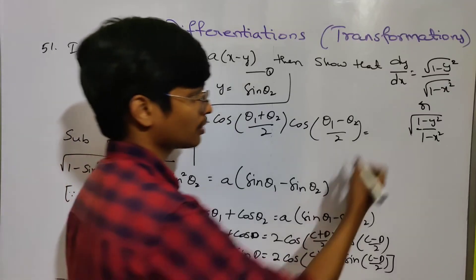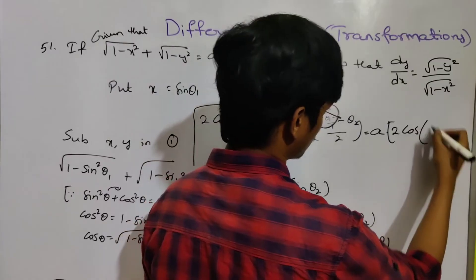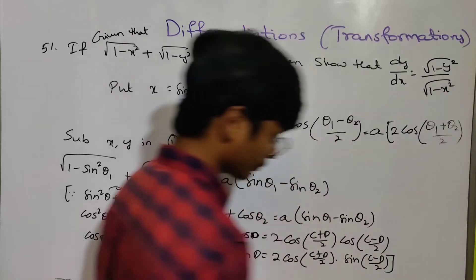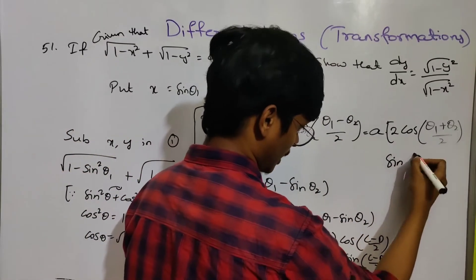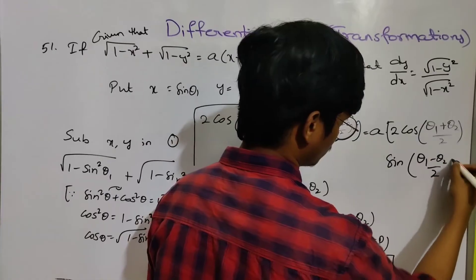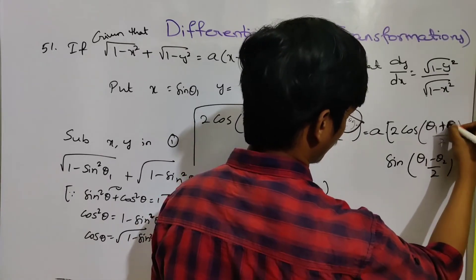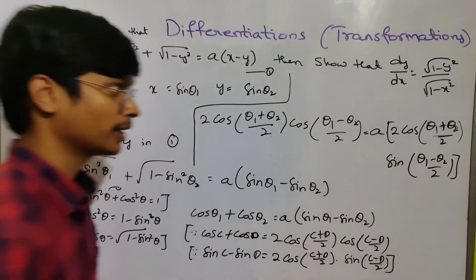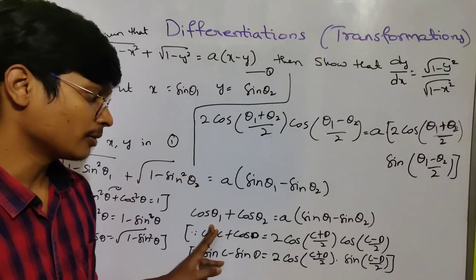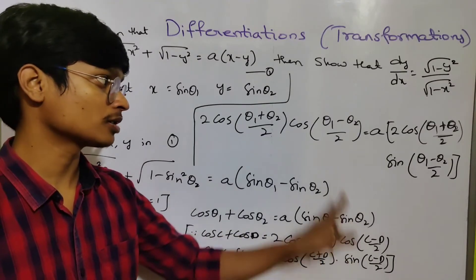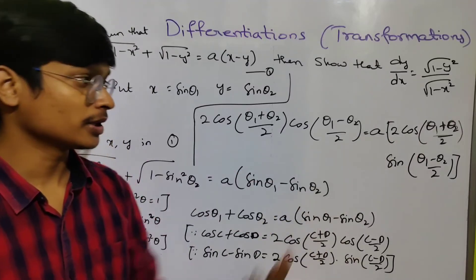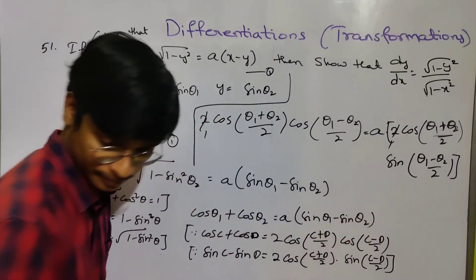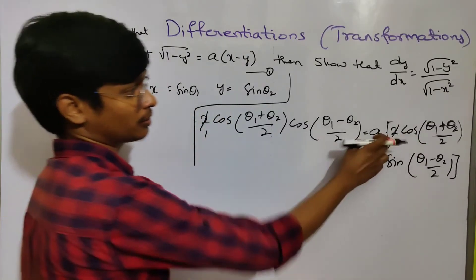sin C - sin D gives a · 2 cos((θ₁+θ₂)/2) · sin((θ₁-θ₂)/2). The formula is now correctly applied. Left side: cos C + cos D = 2 cos((C+D)/2) · cos((C-D)/2). Right side: a · 2 cos((C+D)/2) · cos((C-D)/2). The 2s cancel.